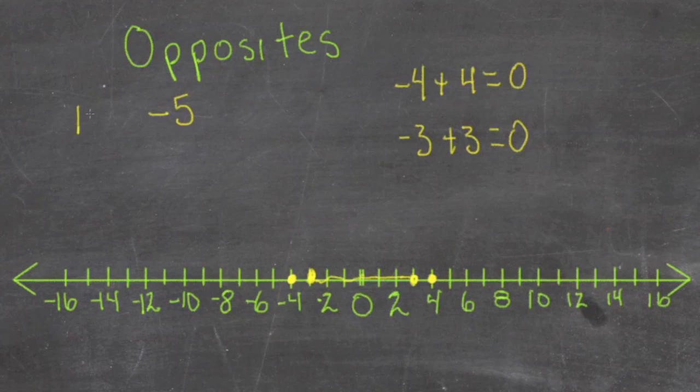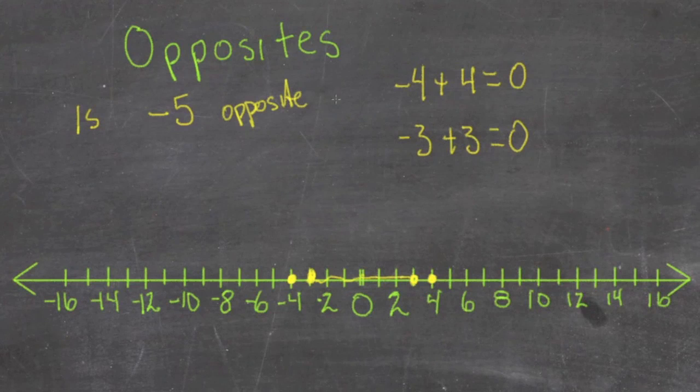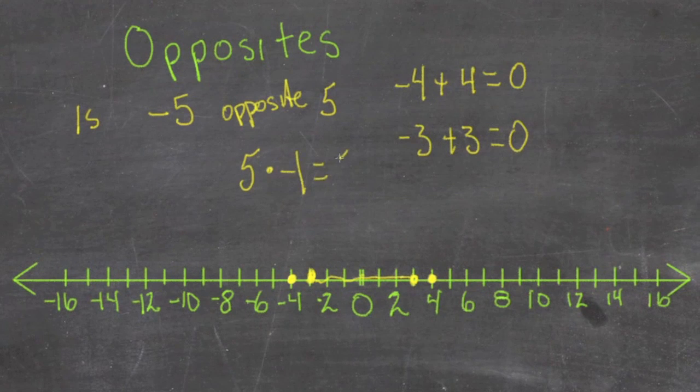So if we were wondering, is negative 5 the opposite of positive 5, we can just see if positive 5 multiplied by negative 1 is negative 5. Since it is, those two numbers are opposites.